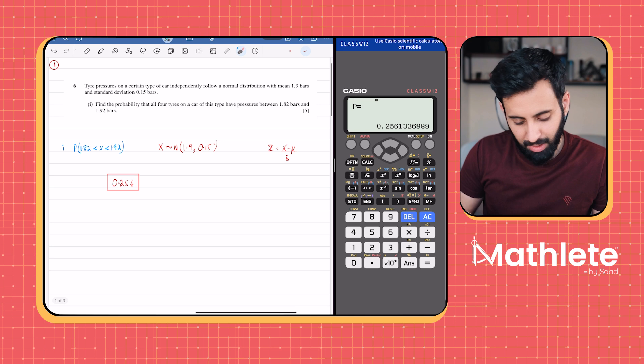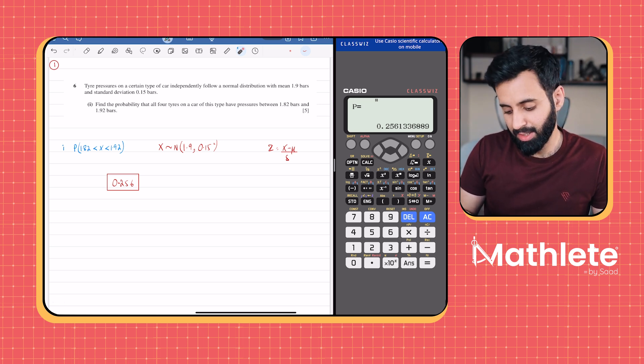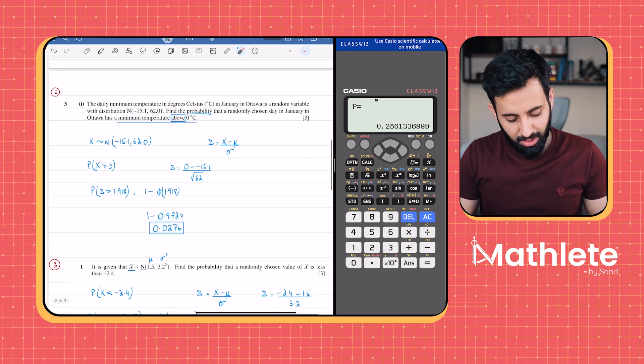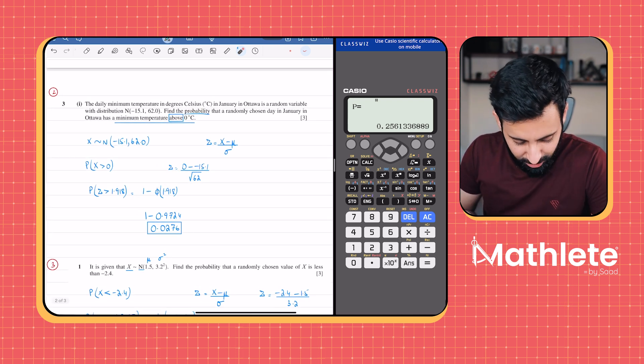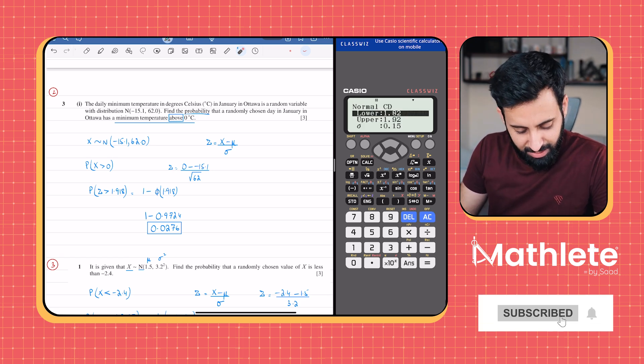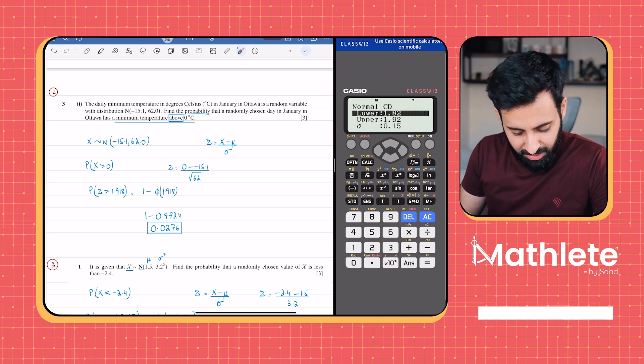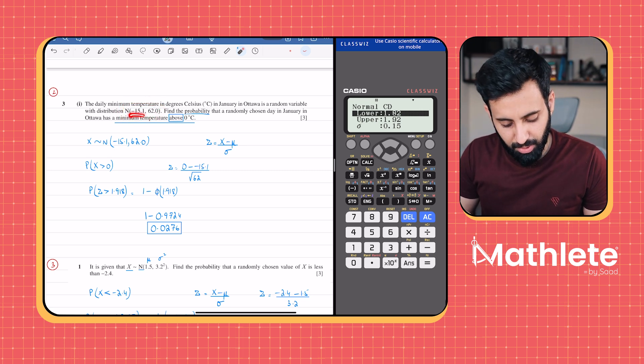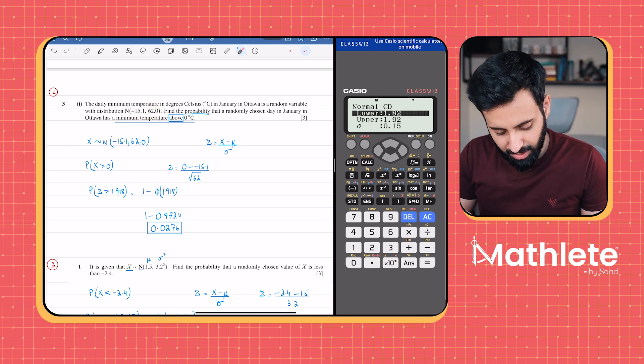This was one example. Every time I do this, I'm honestly surprised that a lot of students aren't aware of this and they're missing out. Now here I have another question which I'm going to solve because there's an important concept that we have to learn. The daily minimum temperature in degrees Celsius in a city is a random variable with distribution minus 15.1 and 62.0. Be careful - minus 15.1 is the mean and 62.0 is the variance.